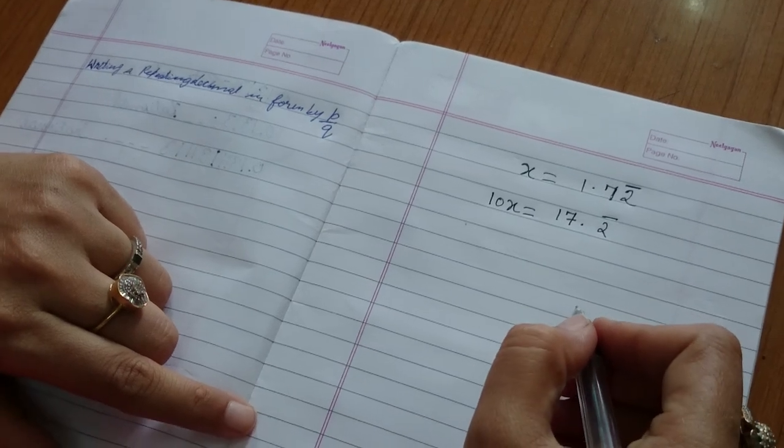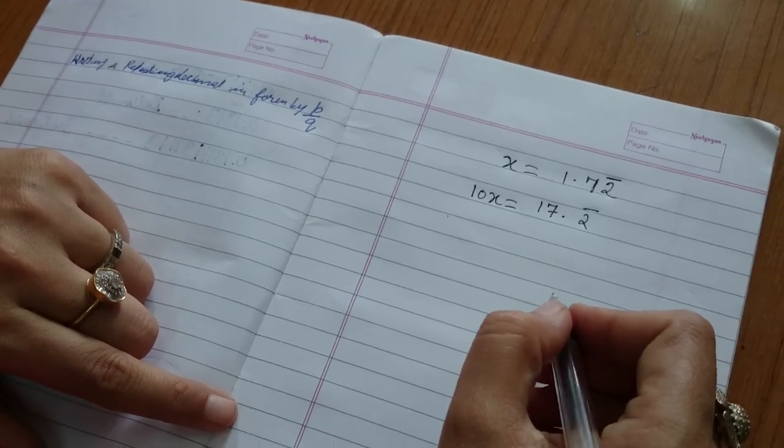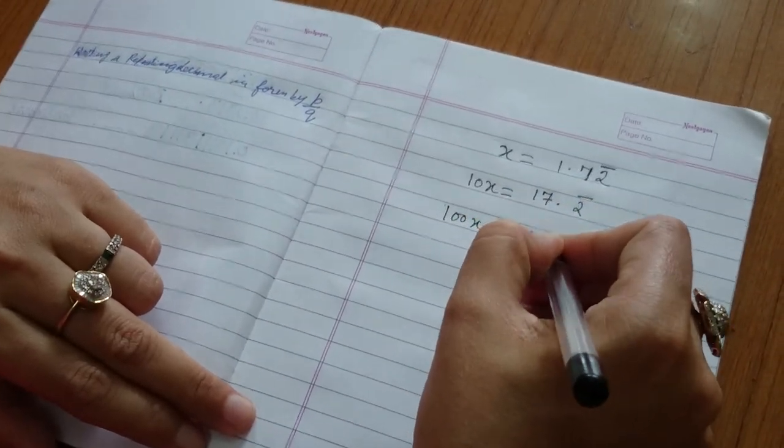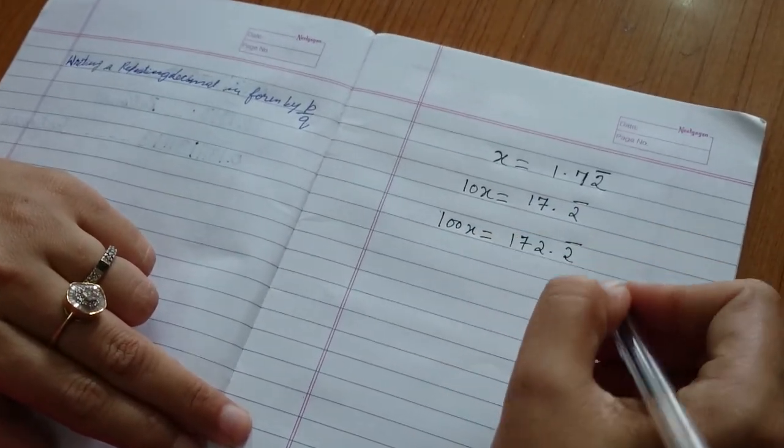We will again multiply both the sides by 10. So we get 100x is equal to 172.2 bar.